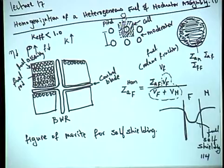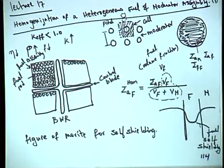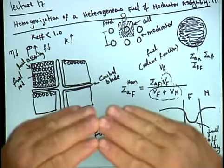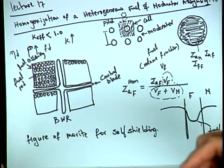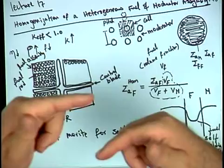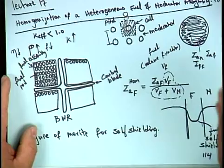Regarding Doppler broadening: the cross-section broadens, the peak decreases, the flux goes up, and absorption increases. This leads to more resonance absorption, a negative feedback effect that reduces the multiplication factor and brings core power down — this is the negative temperature reactivity feedback coefficient.